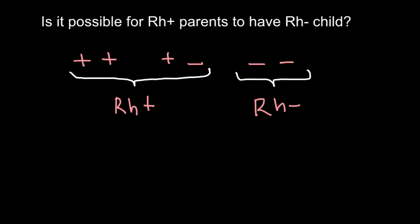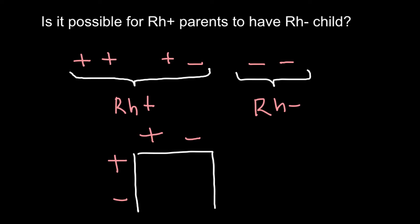Is it possible for parents who are Rh positive to have an Rh negative child? Let's do a simple Punnett square. Imagine that one parent is heterozygous for this trait, so his genotype would be positive and blank — meaning one allele is present and the other is absent. The other parent's genotype would also be positive and blank — one positive allele present, the other absent on the other chromosome.